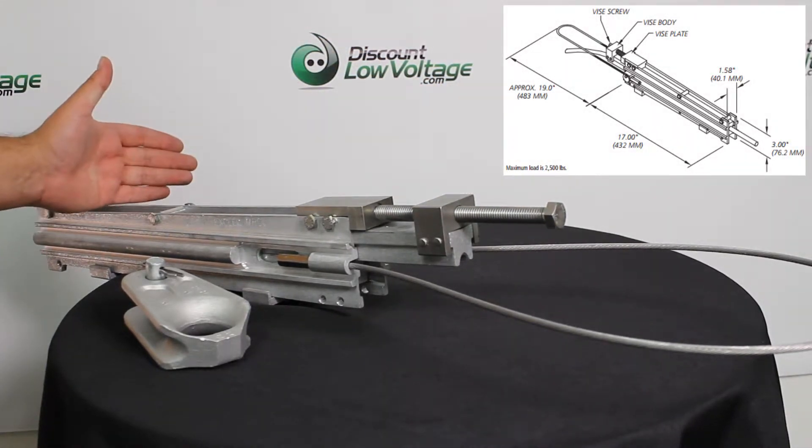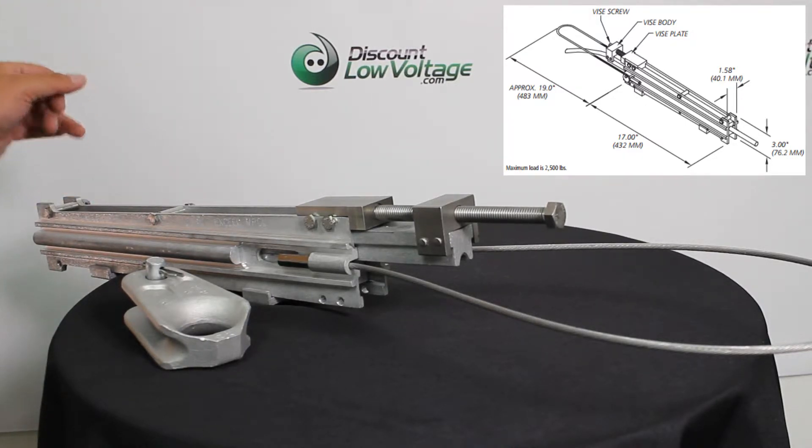Now this is a temporary grip and it's designed to hold up to 2,500 pounds or 50% of the MRCL of the cable.